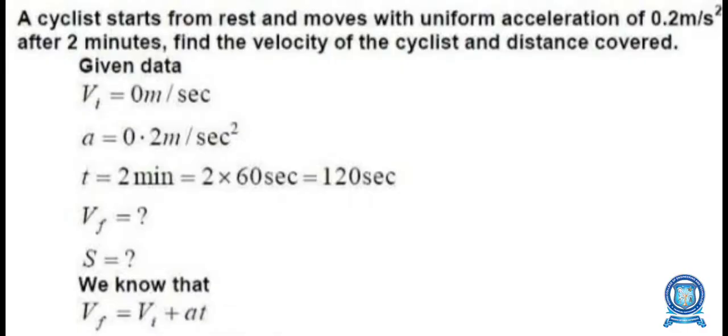Problem 1 is based on the equation of motion of a particle under constant acceleration. A cyclist starts from rest and moves with uniform acceleration of 0.2 m/s² for 2 minutes. Find the velocity of the cyclist and the distance covered. Given data: initial velocity vᵢ = 0 (starts from rest), a = 0.2 m/s², t = 2 minutes = 120 seconds. Find: final velocity vf and displacement s.